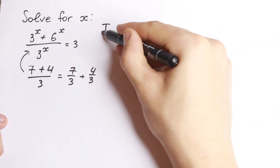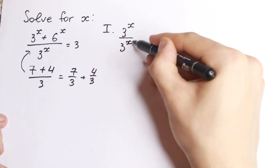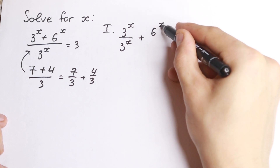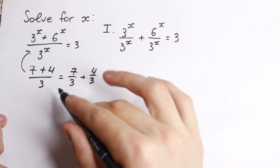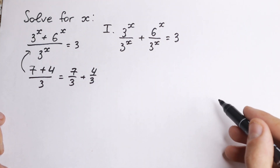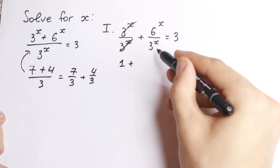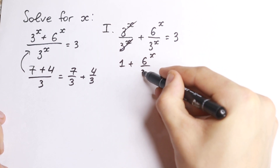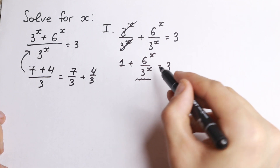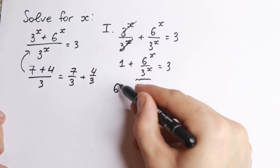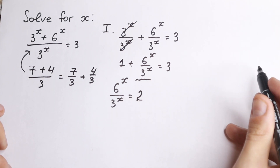So this is the first method — let's divide it by parts. We will have 3 to the x over 3 to the x, plus 6 to the x over 3 to the x, equal to 3. Now, 3 to the x over 3 to the x equals 1. So we have 1 plus 6 to the x over 3 to the x equal to 3. Bringing the constant to the left, we get 6 to the x over 3 to the x equal to 2.